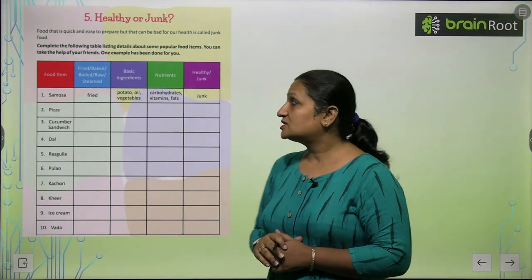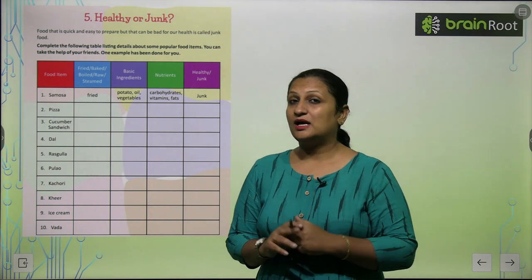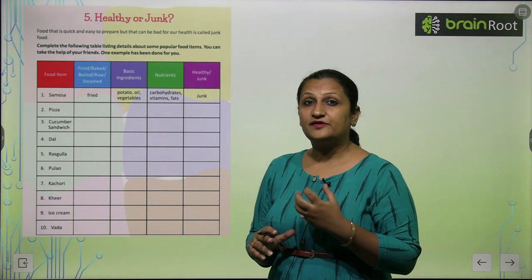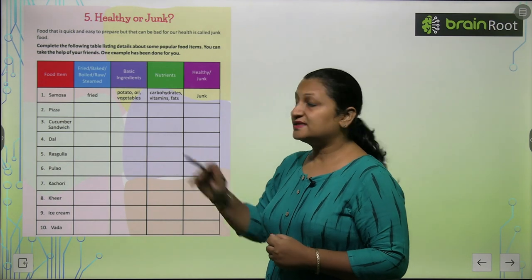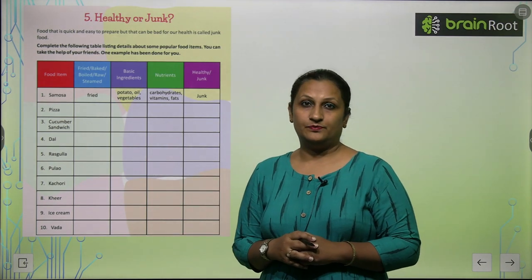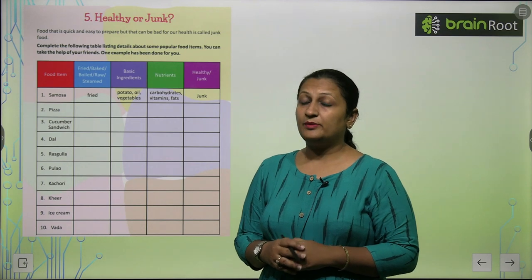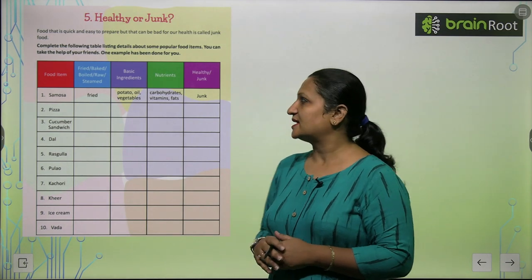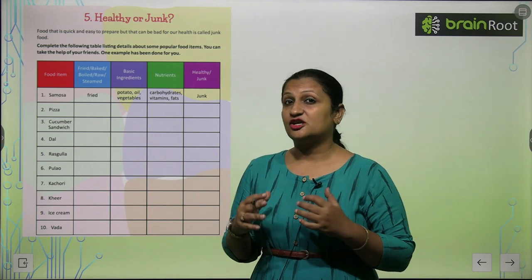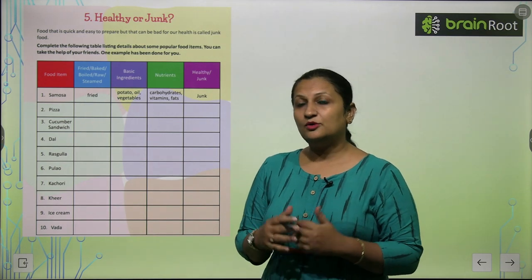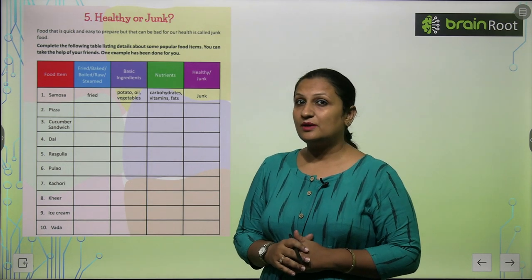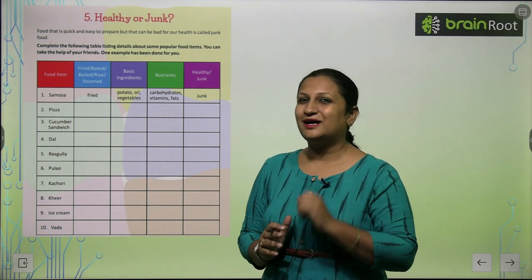Rasgulla — if you've seen gulab jamun, it is fried. Its basic ingredients include milk powder, a little flour, and a large amount of sugar. Its nutrients include a large amount of fats and carbohydrates. So its category is junk food — we should eat rasgulla in moderation.